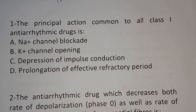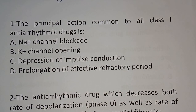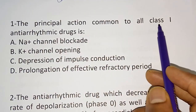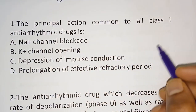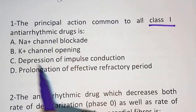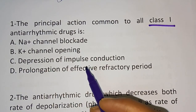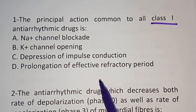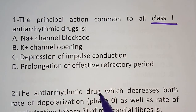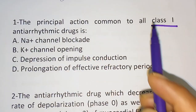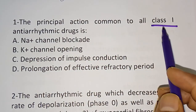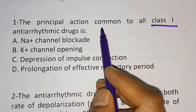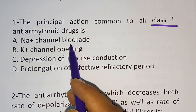We will move to the first question of this video about anti-arrhythmic drugs. The first question: what is the principal action common to all class 1 anti-arrhythmic drugs? For this, you should know the classification of anti-arrhythmic drugs, which we will discuss at the end after the MCQs. Option A: sodium channel blockage. Option B: potassium channel opening.